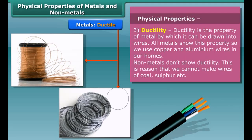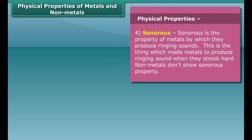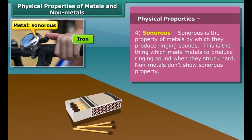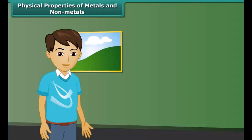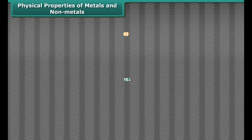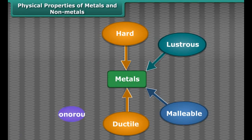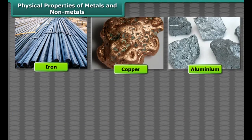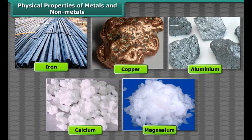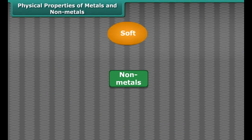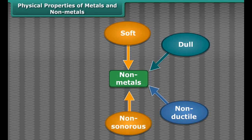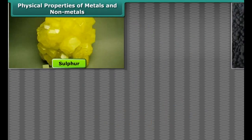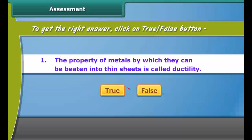Another property of metals is that they are sonorous — metals produce ringing sounds when struck, so they are said to be sonorous. Materials other than metals are not sonorous. So, metals are hard, lustrous, malleable, ductile, sonorous, and good conductors of heat and electricity. Iron, copper, aluminium, calcium, magnesium, etc. are examples of metals. Non-metals like coal and sulfur are soft, dull, non-ductile, non-sonorous, non-malleable, and poor conductors of heat and electricity. Sulfur, carbon, oxygen, phosphorus, etc. are examples of non-metals.